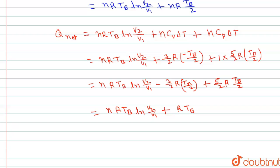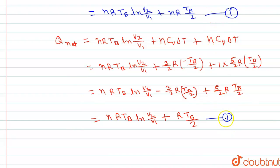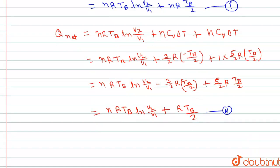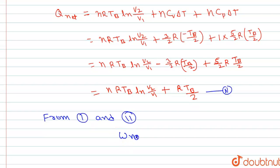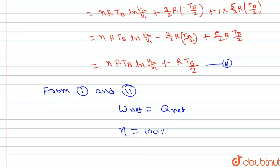From here we can see that total work done equals R · T_B/2. And from first and second equations, Q_net is equal to W_net. This means efficiency is equal to 100%. So efficiency = 100% is the answer. Hope this answers the question, thank you.